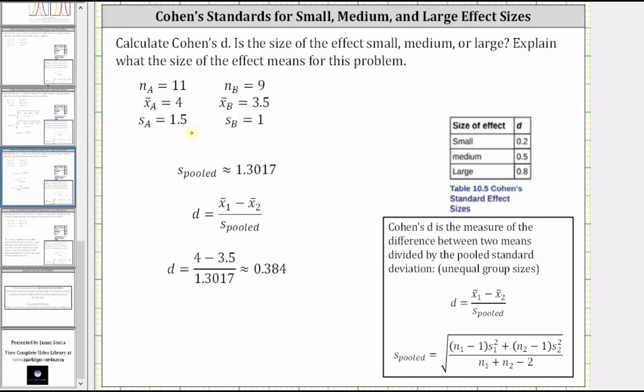Letting x bar sub 1 equal x bar sub a and x bar sub 2 equal x bar sub b, Cohen's d is equal to the quantity 4 minus 3.5 divided by 1.3017, which is approximately 0.384.